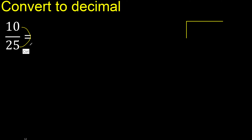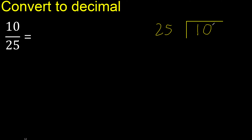10 divided by 25. 10 is less, therefore complete — always complete with 0.